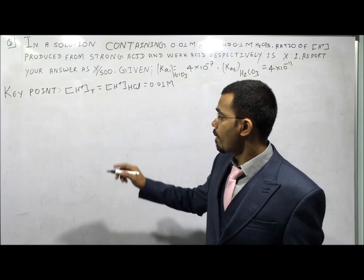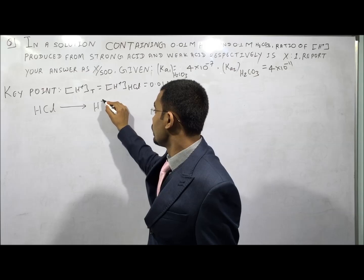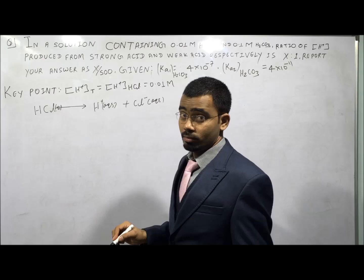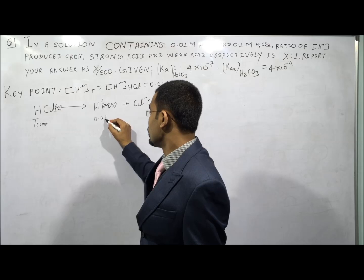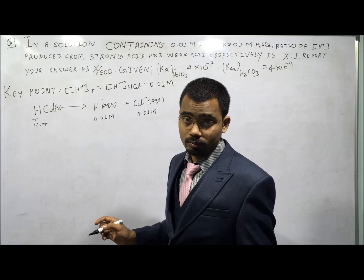Since HCl is a strong acid, it will dissociate 100%: HCl → H⁺(aq) + Cl⁻(aq). At completion, the value of [H⁺] will be 0.01 M and [Cl⁻] will be 0.01 M, because the coefficient ratio is 1:1. Now for the weak acid: